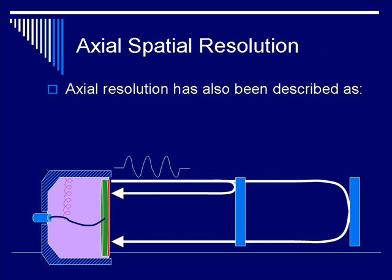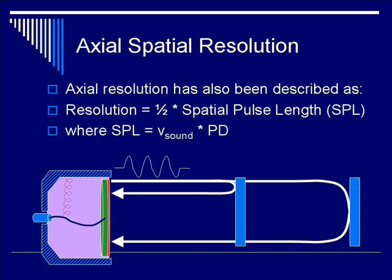Axial resolution has also been described as one-half the spatial pulse length, where SPL, spatial pulse length, equals the speed of sound times the pulse duration. Just like you can talk about ultrasound pulses in the time domain, you can also talk about it in the spatial domain.